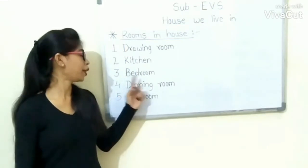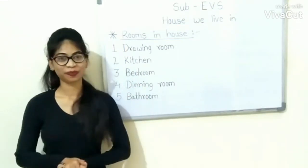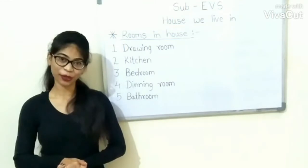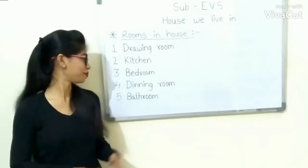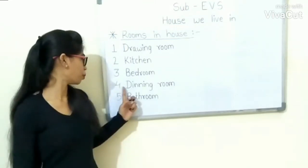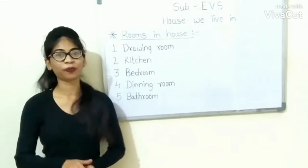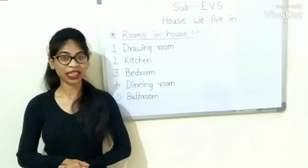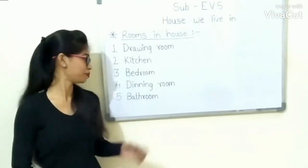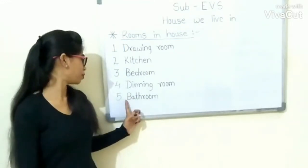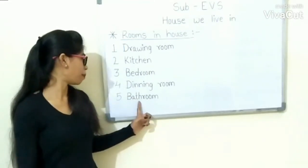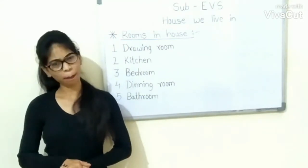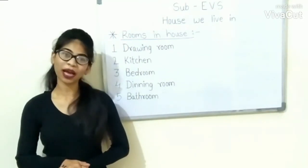Third, bedroom. We sleep and rest in the bedroom. Fourth, dining room. We eat in the dining room. Fifth, bathroom. We wash and bathe in the bathroom.